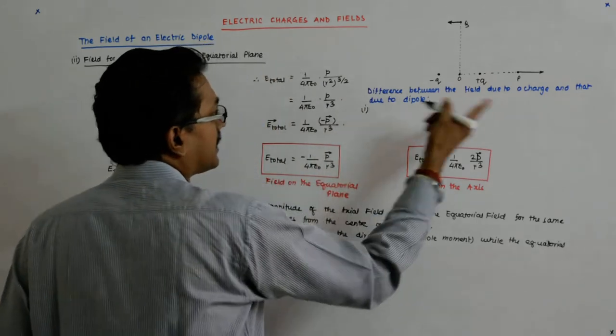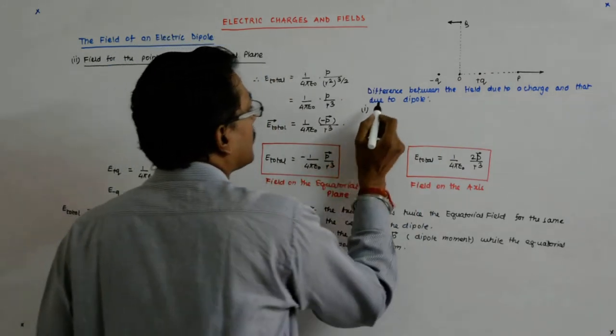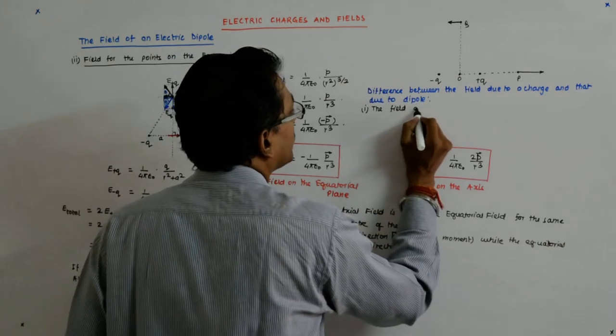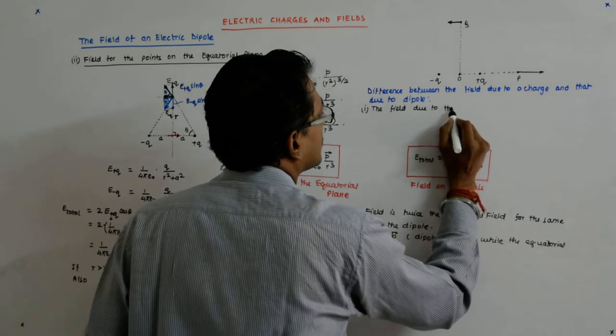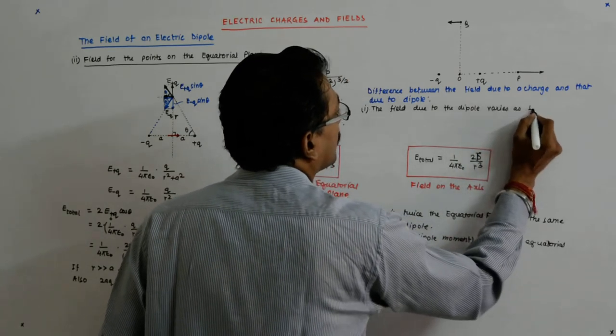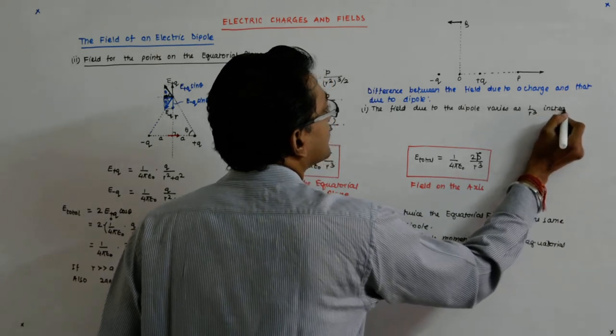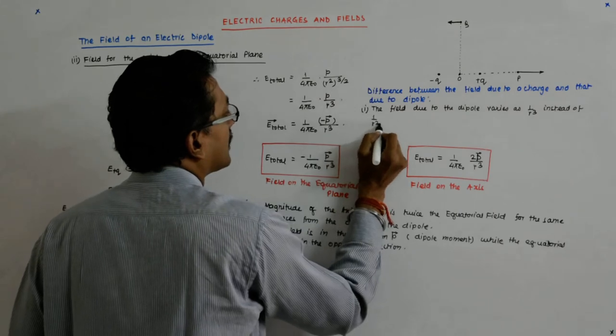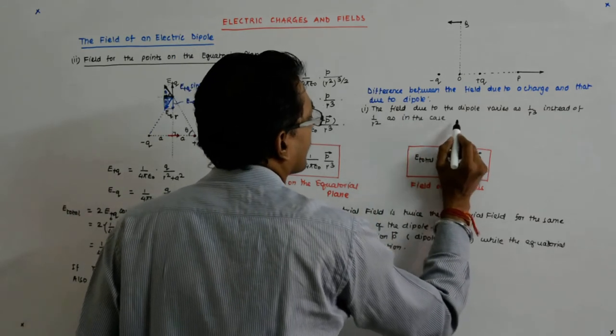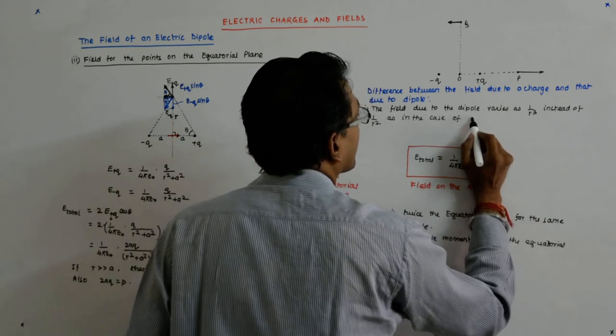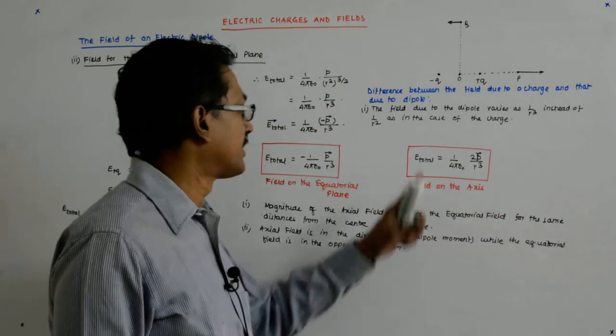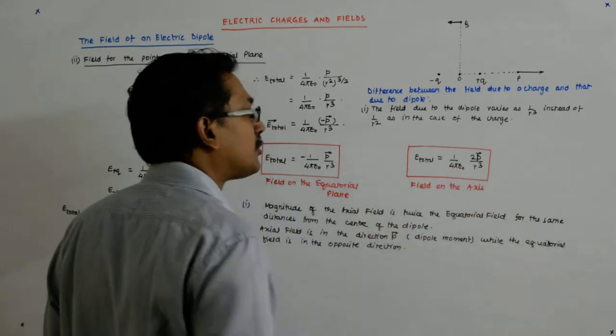The first thing, the difference between the field due to a charge and that due to a dipole is that the field due to the dipole varies as one upon r cube instead of one upon r square as in the case of the charge. Right, single charge it varies as one upon r square, here it is varying as one upon r cube.